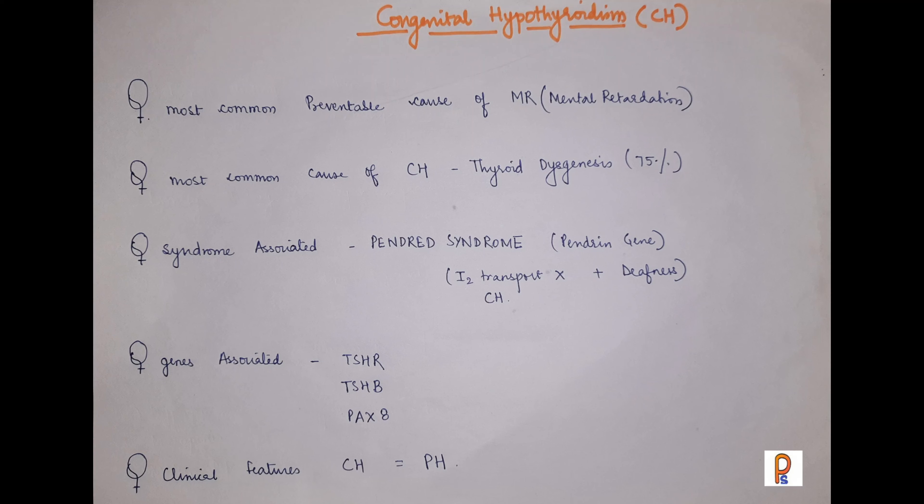Today I am sharing a video on congenital hypothyroidism. This topic is important because congenital hypothyroidism is the most common preventable cause of mental retardation. If you identify it timely and treat it well, you can prevent the child from developing intellectual disability.